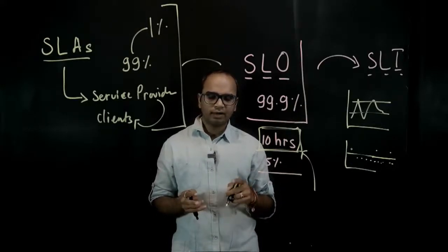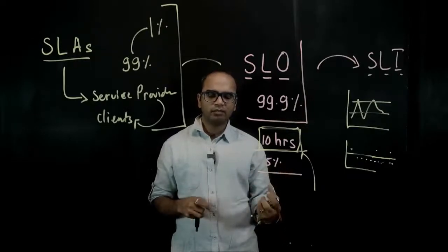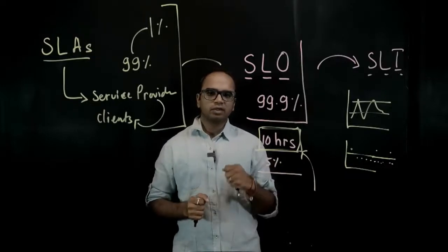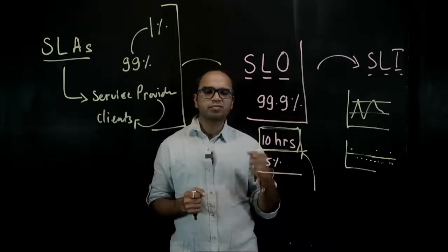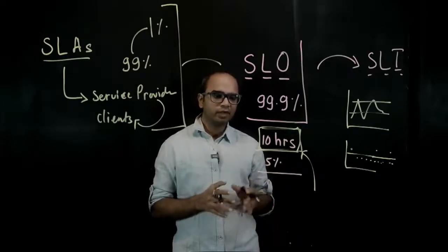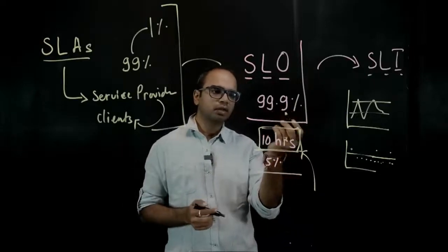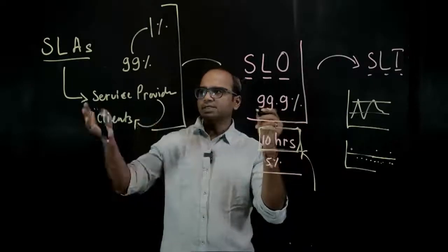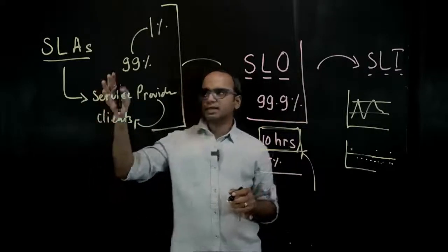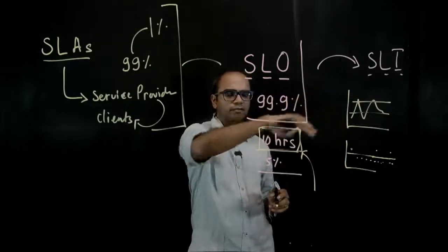If you try to achieve 100% of availability, it is both difficult and expensive to do. If you are trying for 100%, it's very little leeway that you have for upgrading your system, maintaining your system, pushing all the changes that you want which the customers are asking for. If you want to have that leeway, you have to have a reasonable SLO and a reasonable SLA based on that. This is how the SLAs, SLOs and SLIs are defined in an organization.